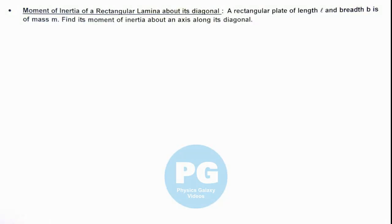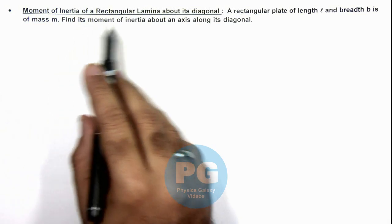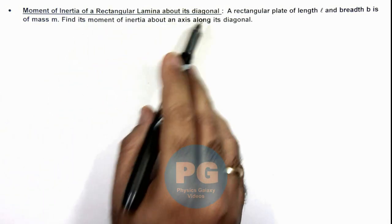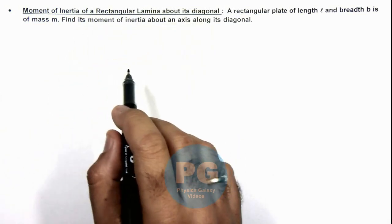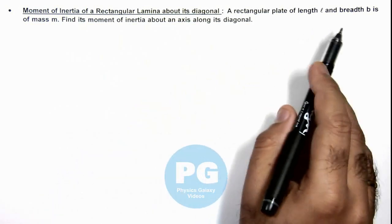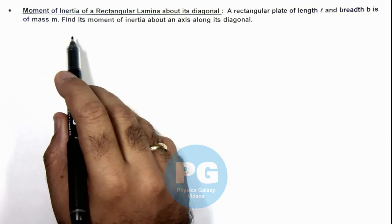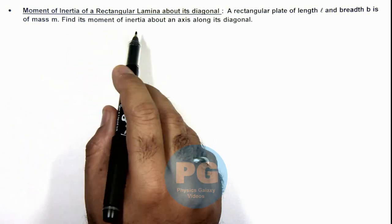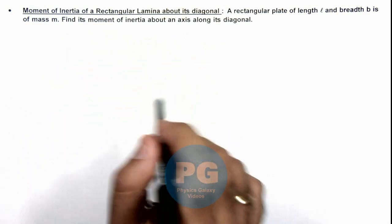In this illustration, we'll discuss the moment of inertia of a rectangular lamina about its diagonal. We are given that a rectangular plate of length l and breadth b is of mass m, and we are required to find its moment of inertia about an axis along its diagonal.